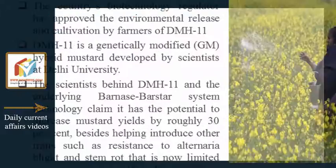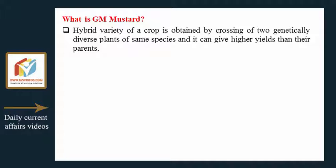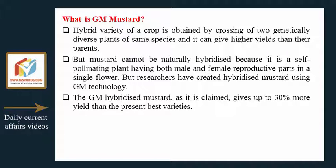A hybrid variety of a crop is obtained by crossing two genetically diverse plants of the same species, and it can give higher yields than its parents. However, mustard cannot be naturally hybridized because it is a self-pollinating plant, having both male and female reproductive parts in a single flower. Researchers have therefore created hybridized mustard using GM technology, which is claimed to give up to 30 percent more yield than the best present varieties.